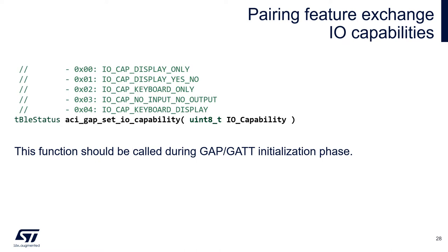The input parameter can take one of five possible values: display only; display and yes/no — meaning for example a button that can either confirm or reject that the numeric comparison value is the same or not; keyboard only; no input and no output; and both keyboard and display.